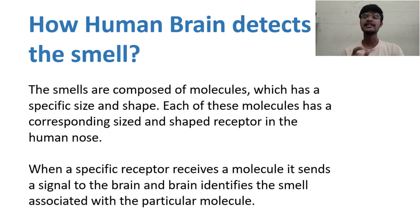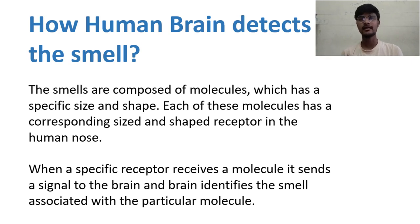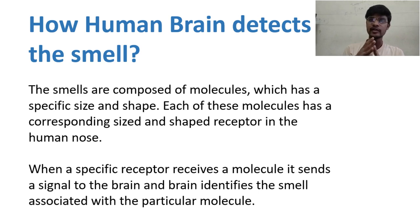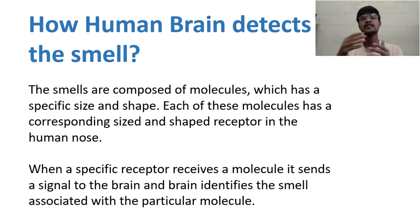Basically, smell is nothing but a vapor — a gas of molecules. Each odor will contain different molecules of different sizes and shapes. For example, if you consider three components A, B, and C, each will have different molecules of different sizes and shapes. Based on the size and shape of the molecules, the odor of the component is decided.